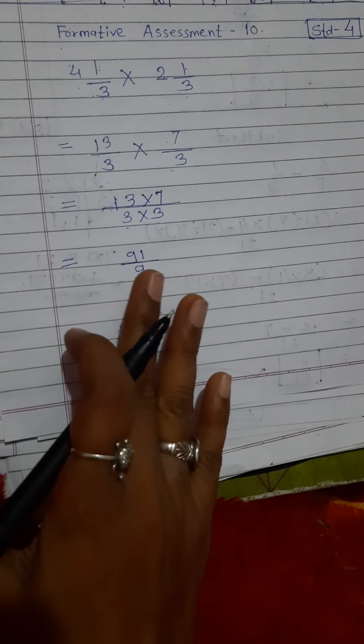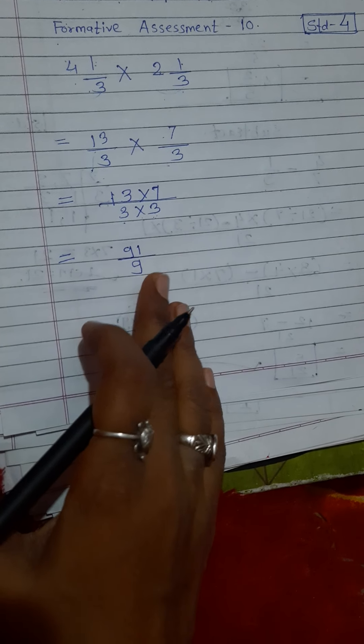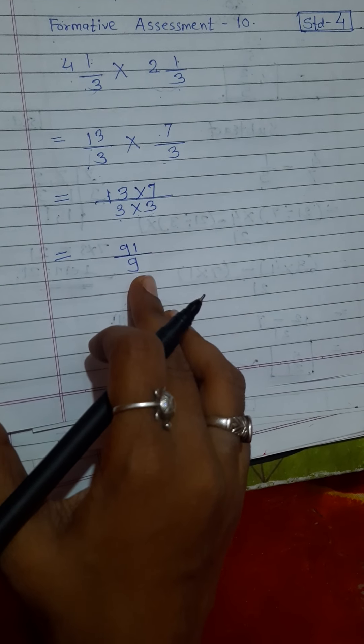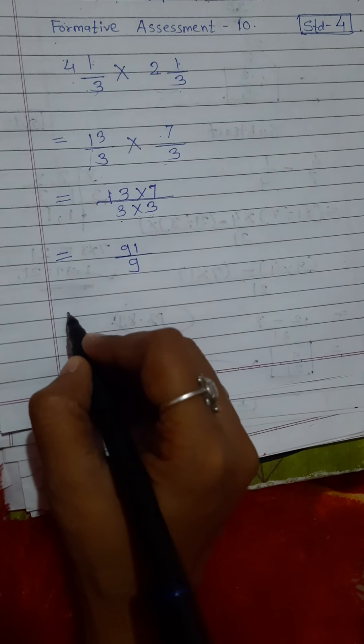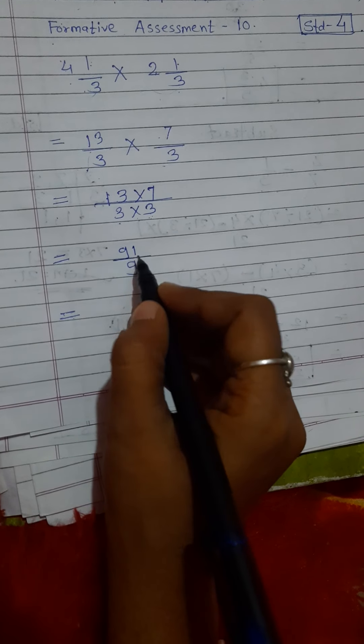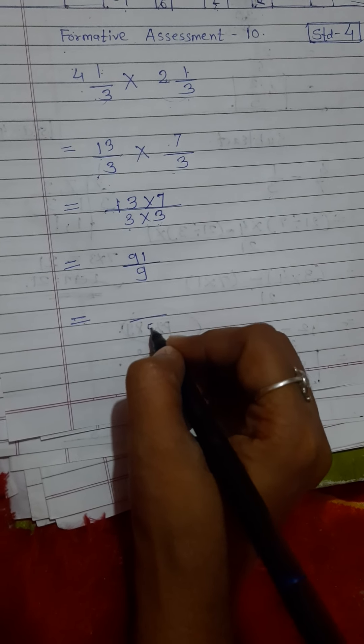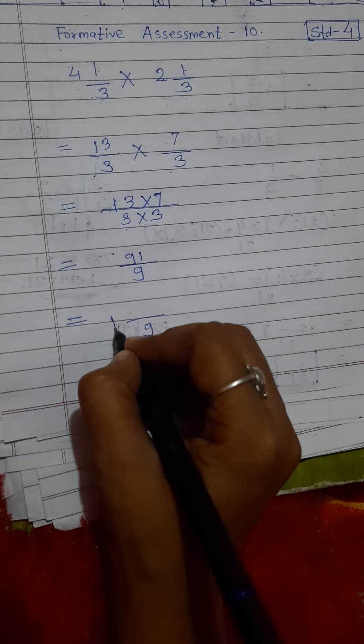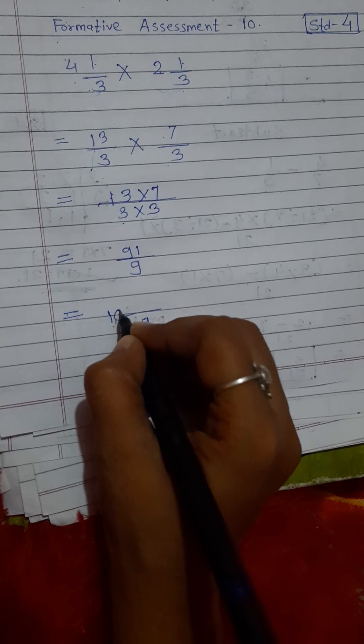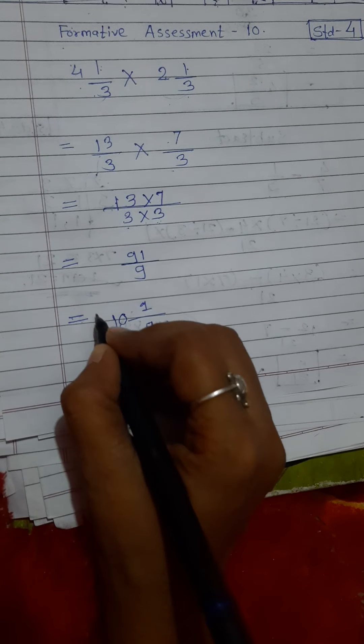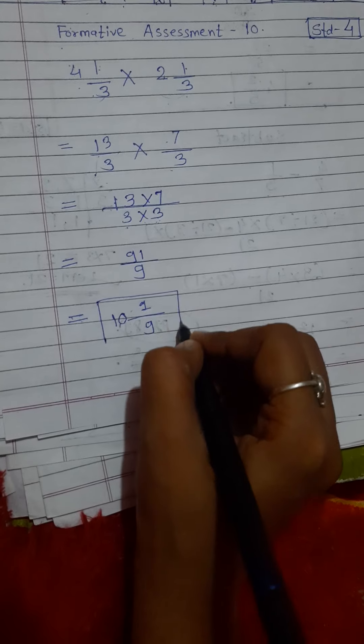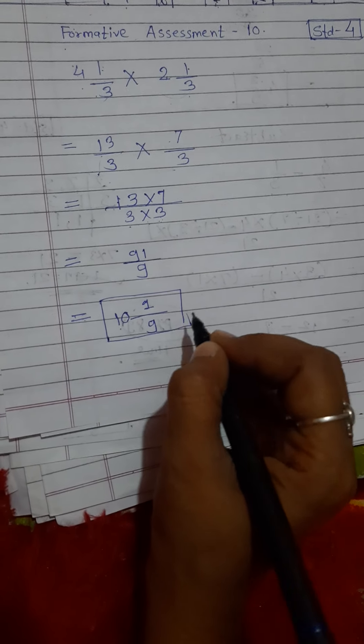Now we can't divide that because that is the improper fraction. That's why we just convert that fraction to mixed fraction. How? Look at here. 9 × 1 is 9, 9 × 10 is 90, 90 + 1 is 91. That is our mixed fraction and final answer also.